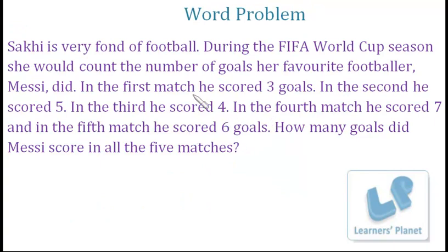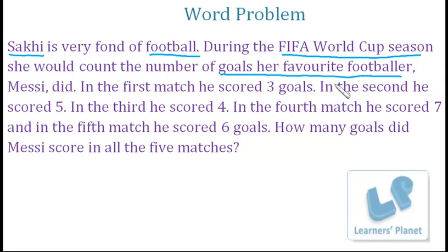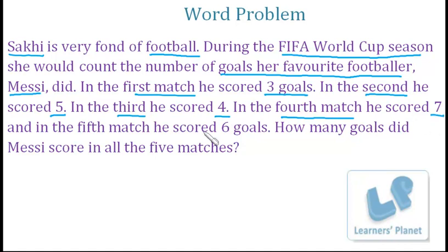Now children, this is our next word problem. Pay close attention to this one because it is a very long one. Sakhi is very fond of football. During the FIFA World Cup season she would count the number of goals her favorite footballer, Messi, scored. In the first match he scored three goals. In the second he scored five. In the third he scored four. In the fourth match he scored seven, and in the fifth match he scored six goals. So how many goals did Messi score in all five matches? We have to add five numbers here, so we will write the statements and then we will add them.